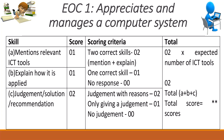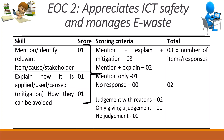Section B has part 1 and part 2. For element of construct 2, where the learner appreciates ICT safety and manages e-waste, we look at mitigation — how threats can be avoided and how they can be solved — and the mitigation measures the learner has given. We are looking at judgment with reasons. If there is no judgment or no reason, the learner scores zero. We need to look at this in detail.